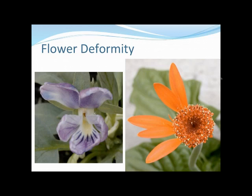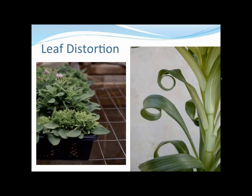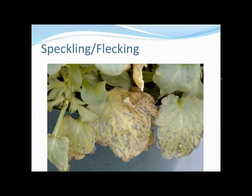Some examples of flower deformity: the plant on the left has a flower that's curled a little bit and is discolored, and the one on the right has petals that just never formed. There's also leaf distortion — these petunias show serious distortion, and we see leaf curling on this lily. There's also speckling, seen in these pansies, where there's spotting of some kind of necrosis across the leaf blade.